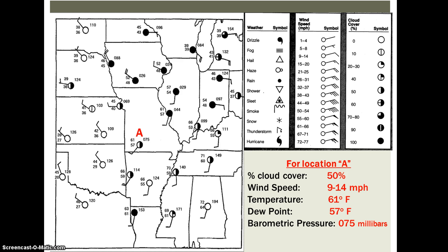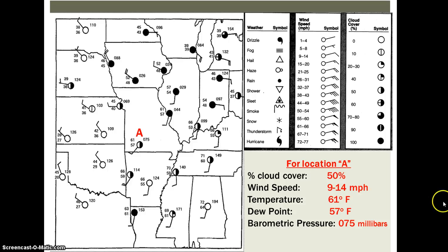Here are the answers. The circle is half black and half white, so cloud coverage is 50%. The flag on the wind line represents 9 to 14 miles per hour for wind speed. The temperature — the number in the top left — is 61 degrees. The dew point — the number in the bottom left — is 57 degrees. The barometric pressure on the right side is 75 millibars. Hopefully that gives you some practice — we'll practice more with weather maps when you get to class tomorrow.